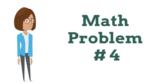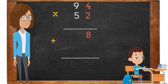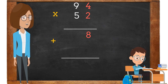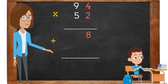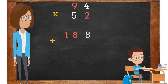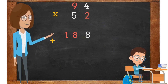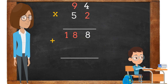Math problem number 4. The first step in this math problem will be to multiply 2 times 4. 2 times 4 is 8. The 8 is placed in the ones place. The next step is to multiply 2 times 9. 2 times 9 is 18. The 8 is placed in the tens place and the 1 is placed in the hundreds place.